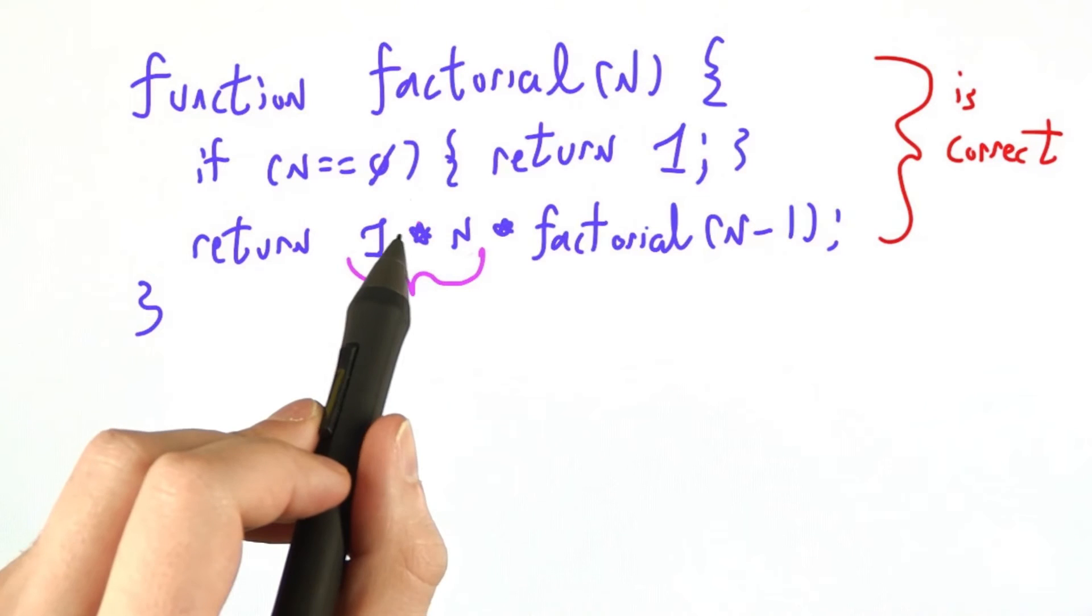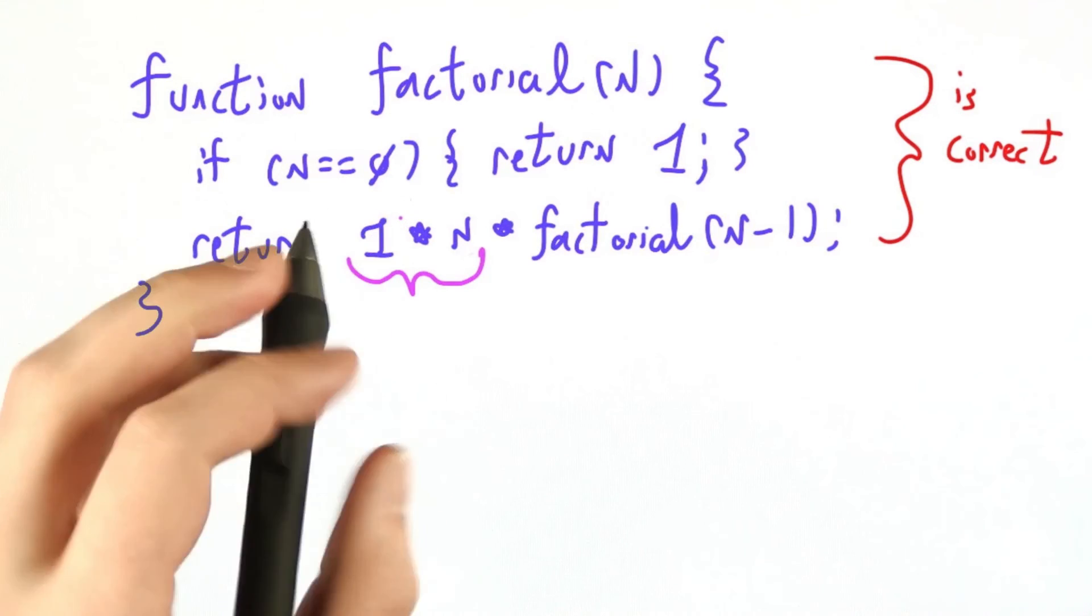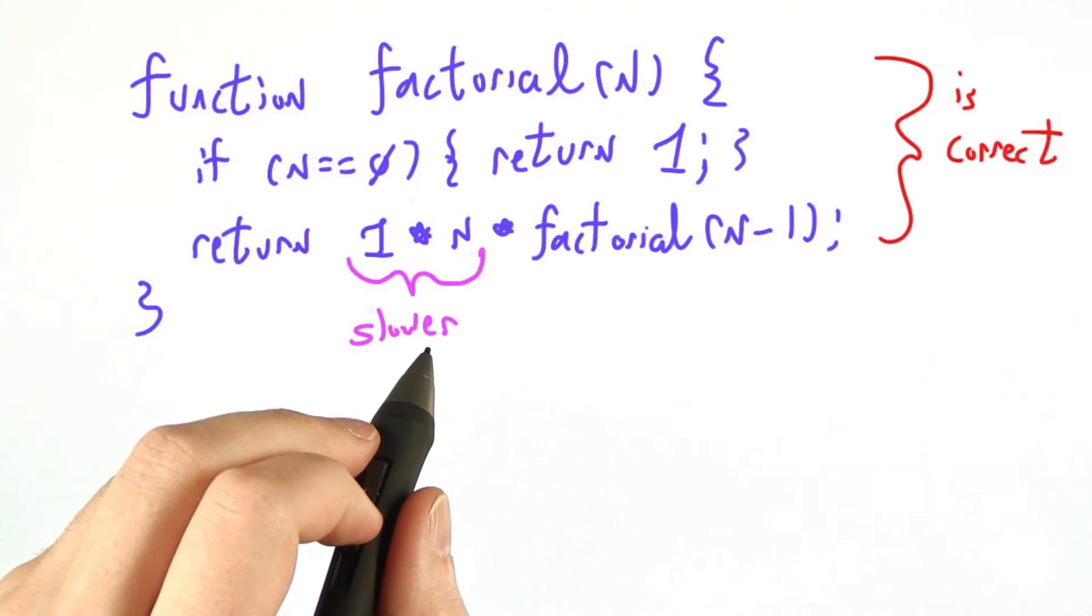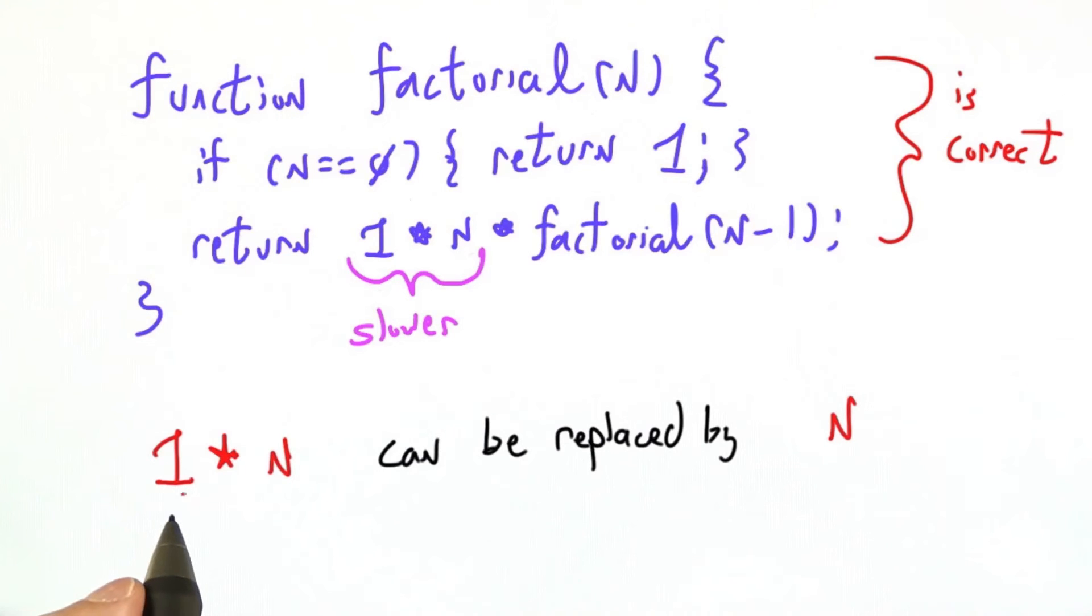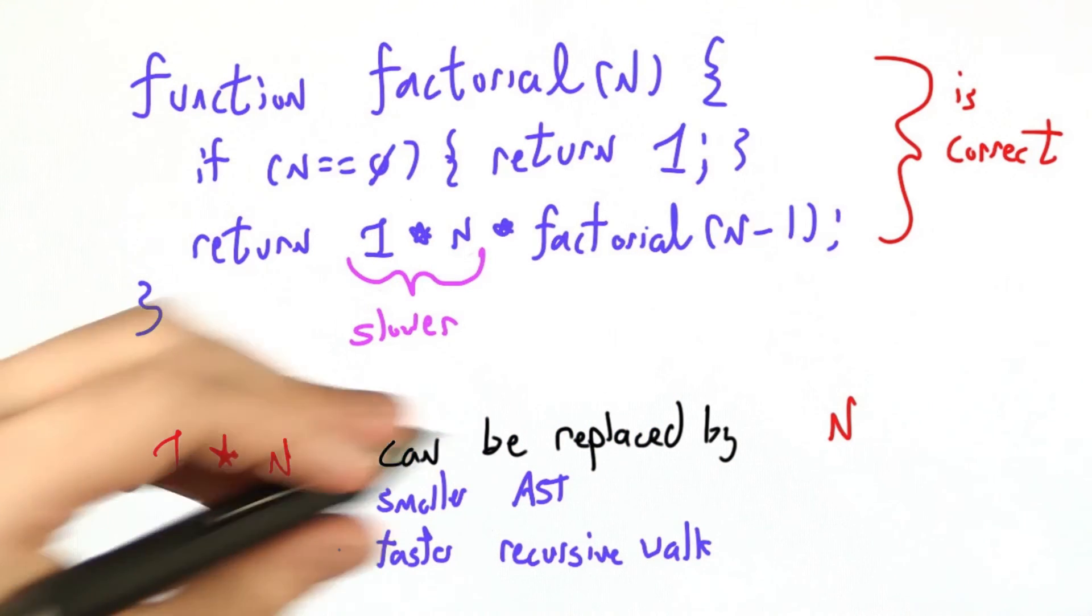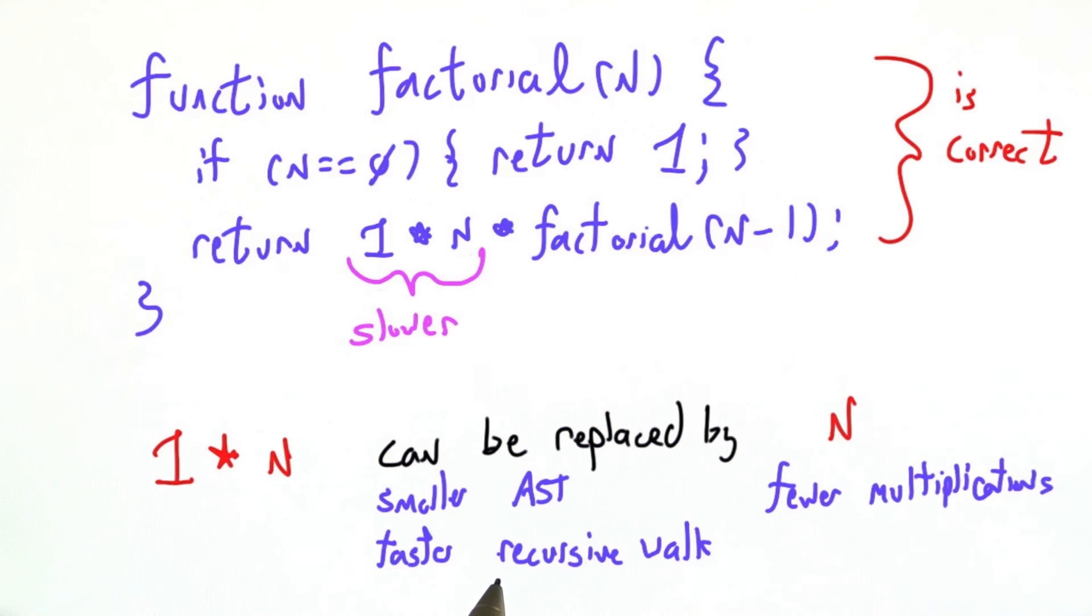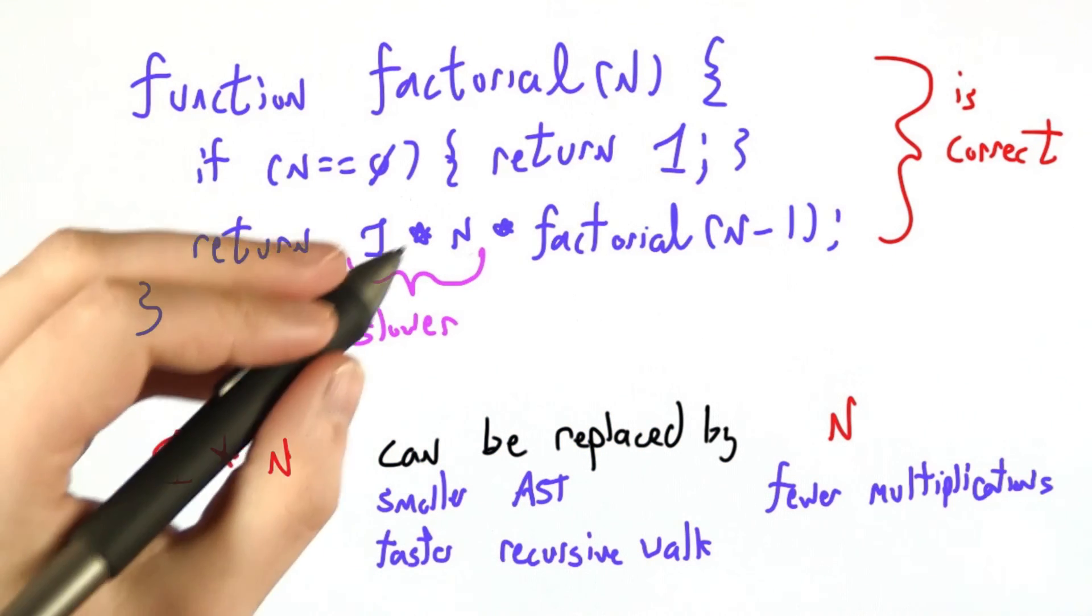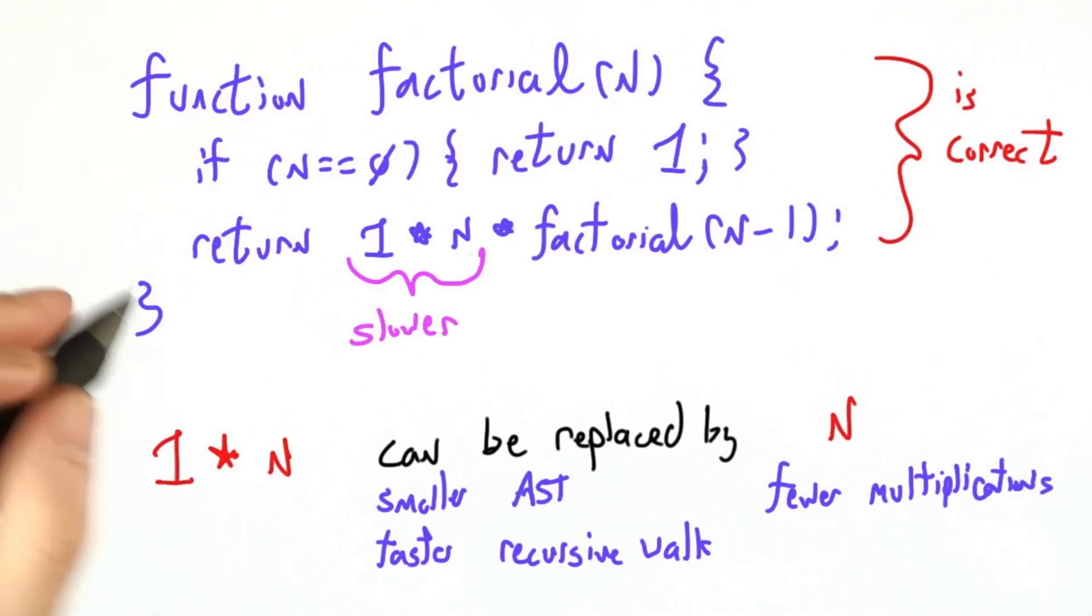This is correct, multiplying something by 1 doesn't change its meaning, but it's slower than necessary. If we're talking about arithmetic, whenever you see 1 times n, you could just replace it by n, and now you're saving time because we're removing nodes from our abstract syntax tree. This means it takes less time to do our recursive walk and interpret it. And we have fewer multiplications. And multiplication is an arithmetic operation that the CPU has to perform. It takes some amount of time.